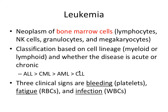This ordering is important to know — there may be a question about which type affects the youngest patient population, which is ALL, or the oldest, which is CLL. A mnemonic I use is 'All Children Are Chill': ALL, then CML (C), then AML (A), then CLL (C-L-L). That's how I remember the ordering from youngest to oldest patients. It's simplified but useful for answering board exam questions.